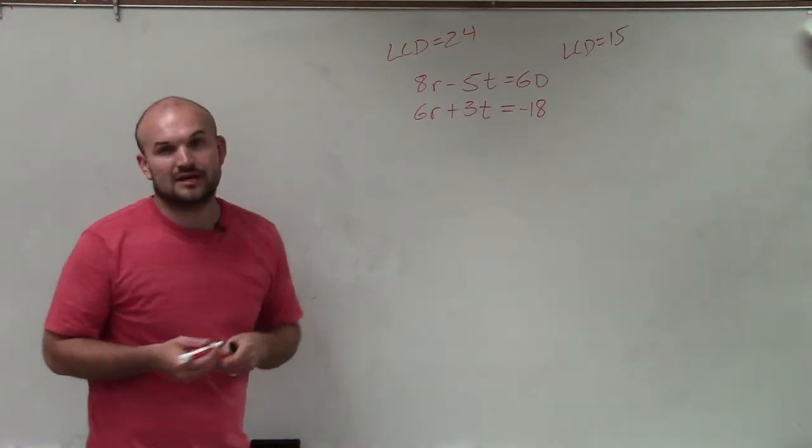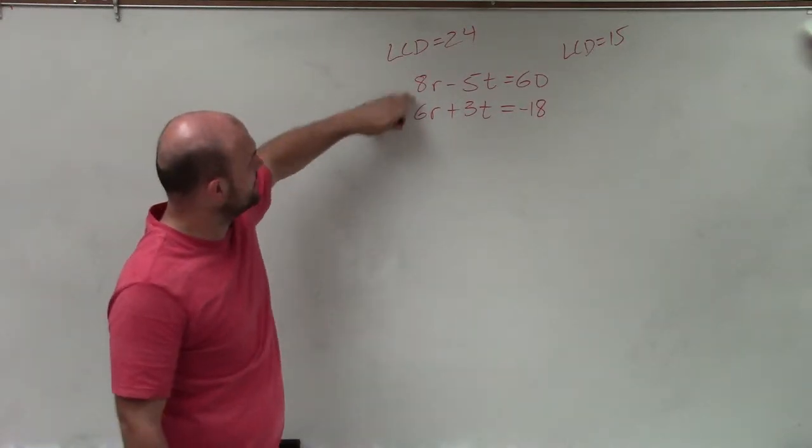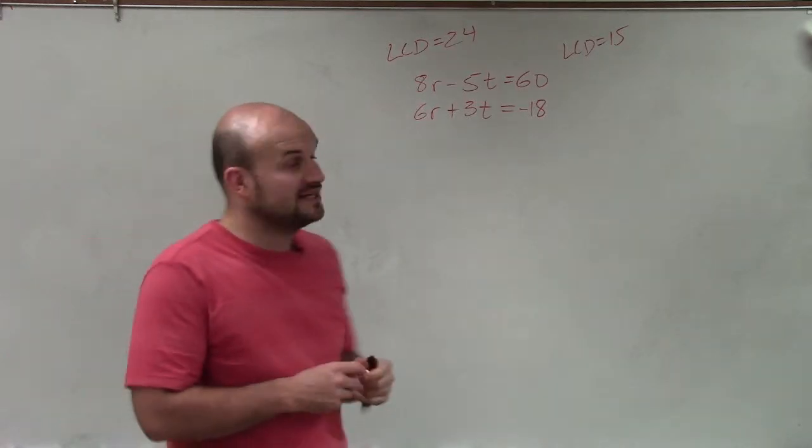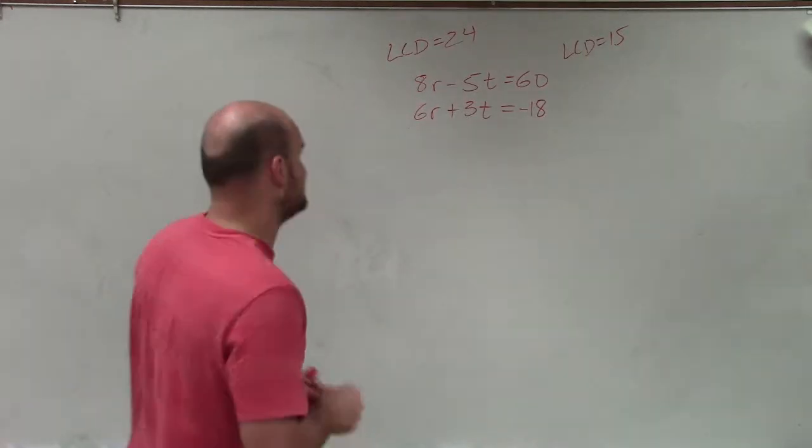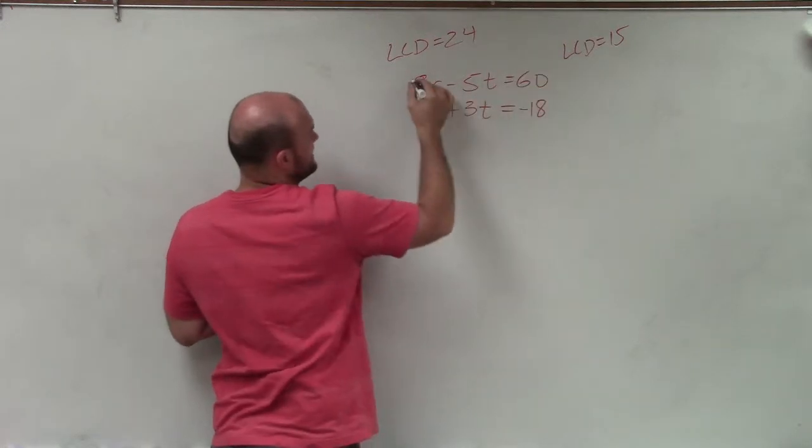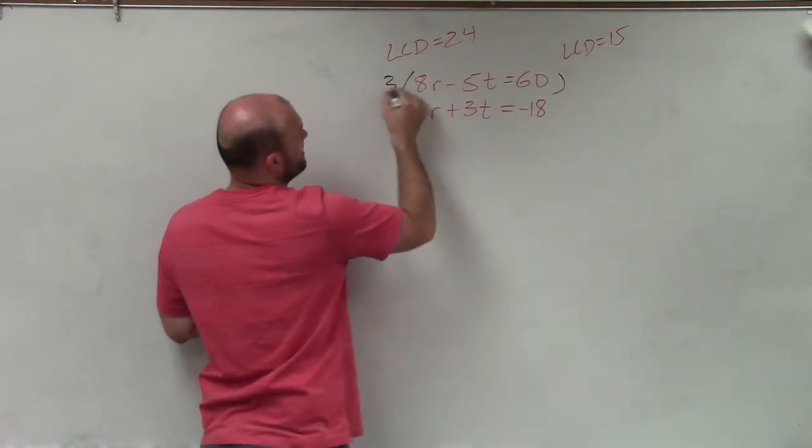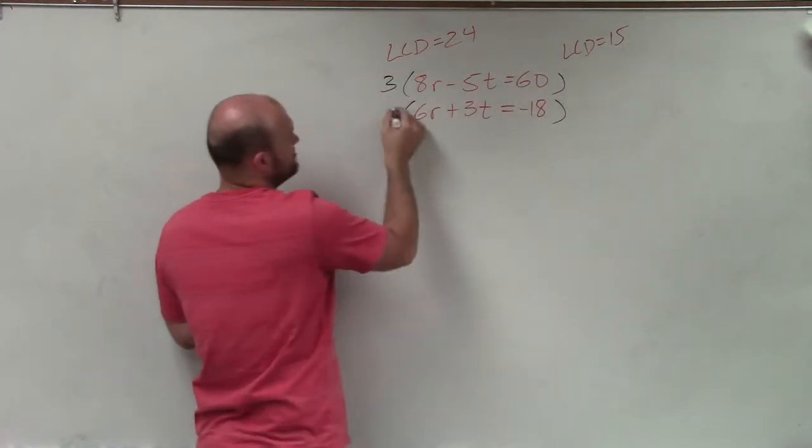So I'm just going to choose LCD as 15. However, if you wanted to get the 8 and 6 to have the LCD of 24, you could do it that way as well. So to get an LCD of 15, that means I need to multiply the top equation by 3 and the bottom equation by 5.